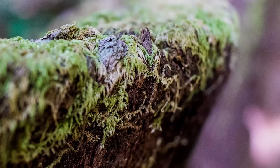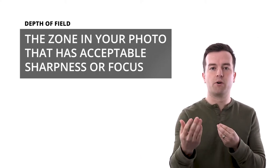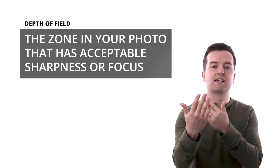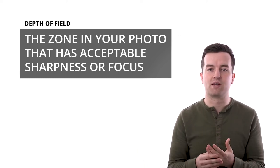For many, when they hear the term depth of field, they think of a blurry background. We'll cover the ways you get a blurrier background in the next lesson. First, let's understand the definition of depth of field. Depth of field is the zone in your photos that has acceptable sharpness — what's appearing in focus.